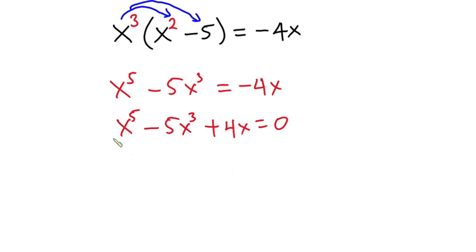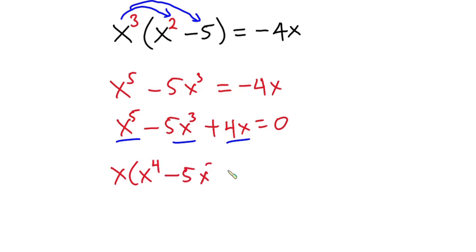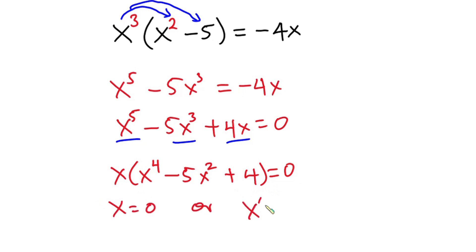As you can see, we have x in every term, so we can factor x out. We get x times the quantity x to the fourth power minus 5x to the second power plus 4, equal to zero. At this point, we can say that x equals zero, or x to the fourth power minus 5x to the second power plus 4 equals zero.